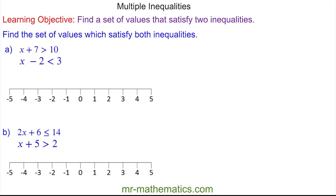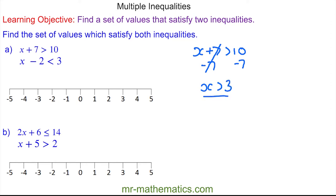We'll begin with x plus 7 is greater than 10. To solve this inequality we're going to take away 7 from both sides. 7 take away 7 will make 0, so x is greater than 10 take away 7, which is 3. We can plot this inequality on the number line as a hollow circle above 3 going to the right.